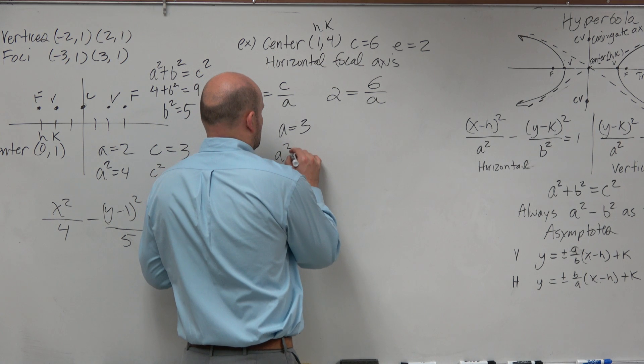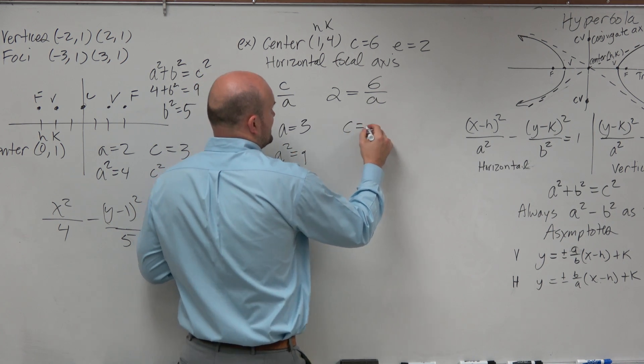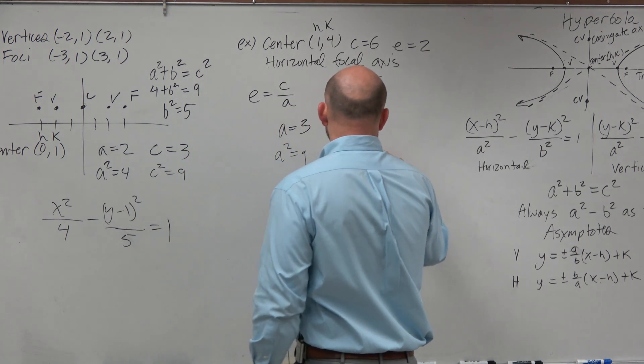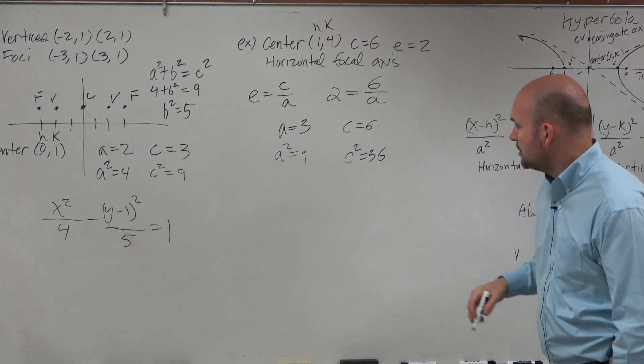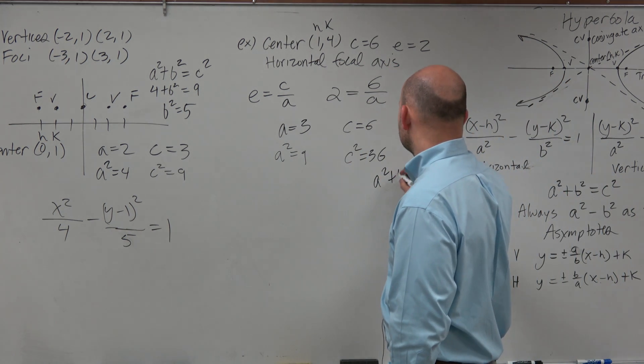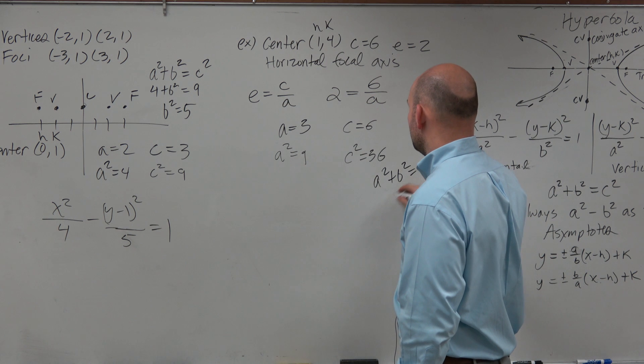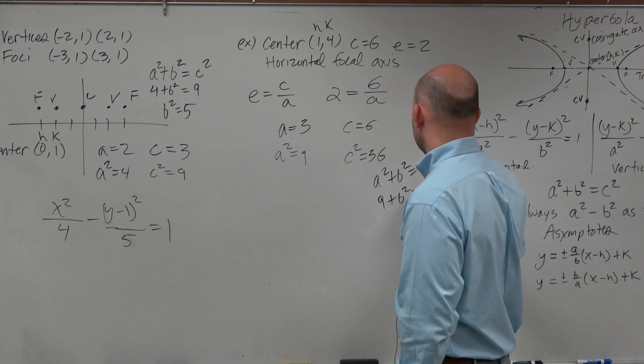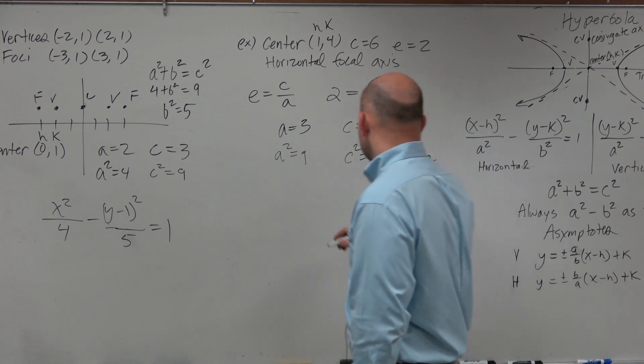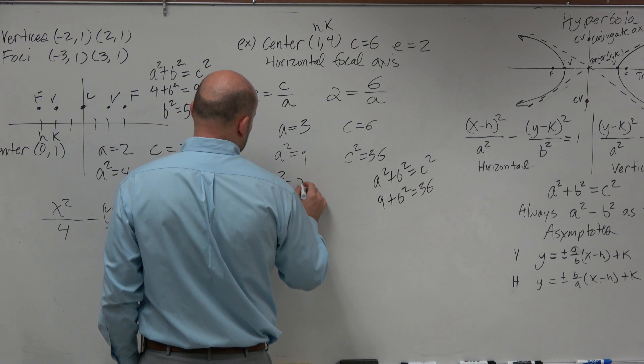So therefore, a squared is equal to 9. If c is equal to 6, then c squared is equal to 36. So let's do a squared plus b squared equals c squared. So that's 9 plus b squared equals 36. So b squared equals 27.